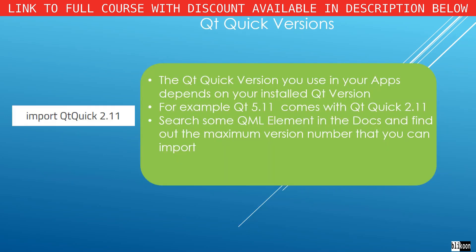I have been getting this question a lot: how do you know the Qt Quick version to import? The Qt Quick version you use comes with your installed Qt version. For example, I am using Qt 5.11, and the Qt Quick version that comes with that is 2.11. Different modules you import in Qt Quick also have versions attached to them, usually different from the Qt Quick version. A good way to find out the version to use is to search for the element in the Qt documentation — they will show you the import you can use, for example for Rectangle.